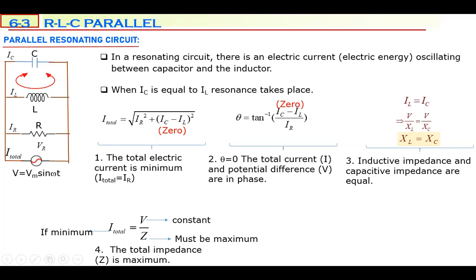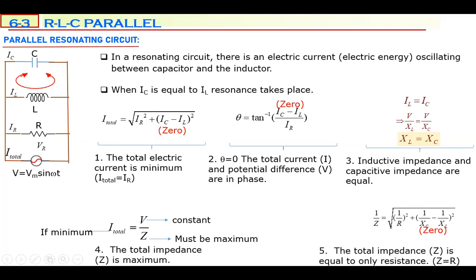According to the admittance equation, XC and XL cancel each other because they are equal, so total impedance Z is only equal to the resistance R of the circuit. These five properties are very important — exam questions are asked about this table.